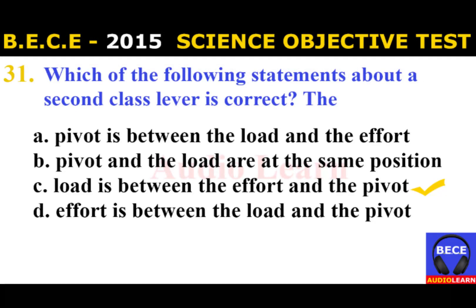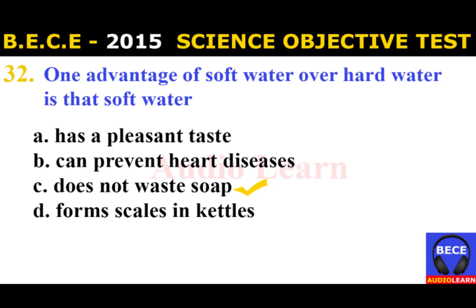Number 31: Which of the following statements about a second-class lever is correct? A. The pivot is between the load and the effort, B. Pivot and the load are at the same position, C. Load is between the effort and the pivot, D. Effort is between the load and the pivot. The answer is C. Load is between the effort and the pivot.